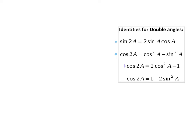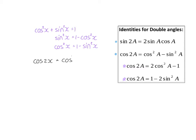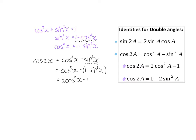We still have two other options for a cos double angle, and they come from the previous identity that cos squared x plus sin squared x equals 1. If we take the current double angle identity, cos squared x minus sin squared x, and substitute sin squared x with 1 minus cos squared x, we get 2 cos squared x minus 1, which is our second option for the cos double angle.